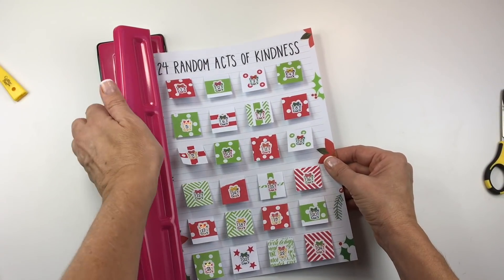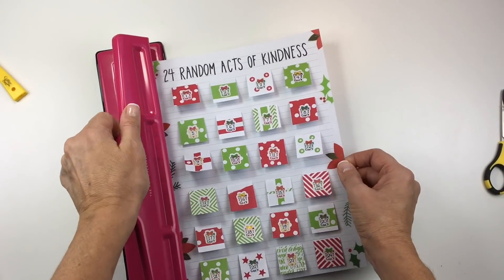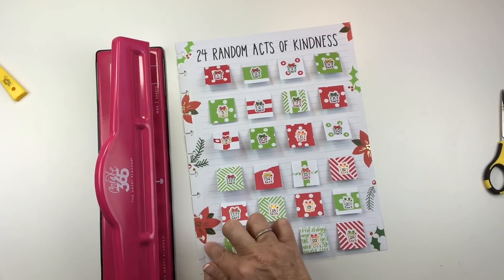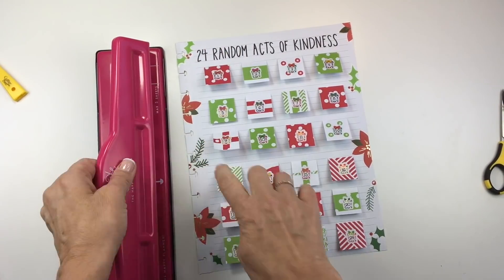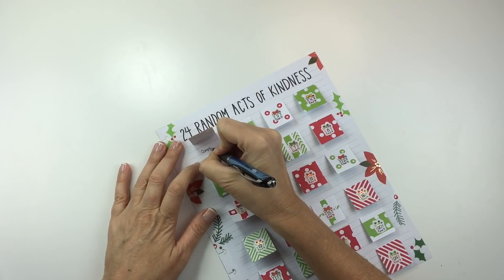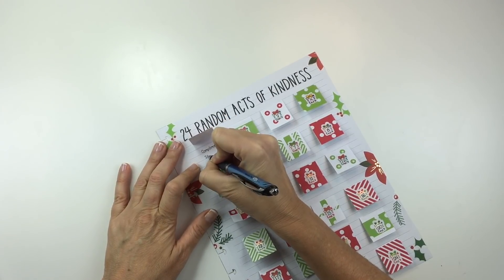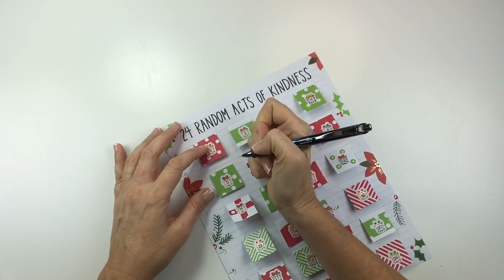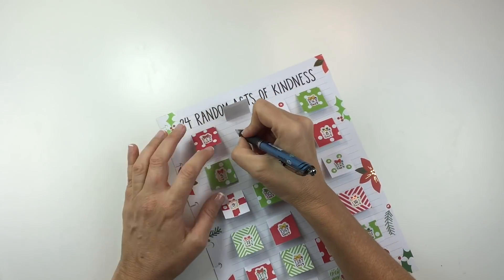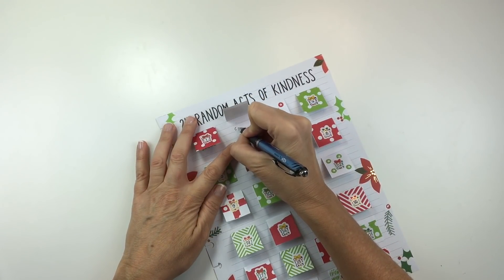Now I am re-punching hoping I get this right. And it did turn out fine and that's the good thing about this punch is it has lines there so you know exactly where to put the paper. So now I am just taking one random act of kindness each day and writing it in underneath the paper flaps.